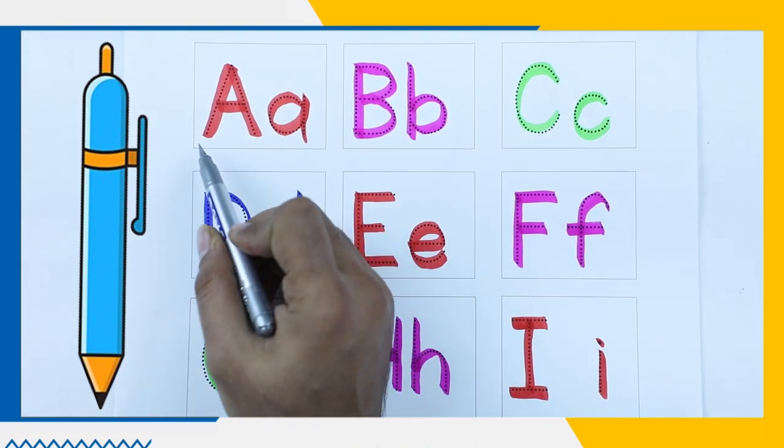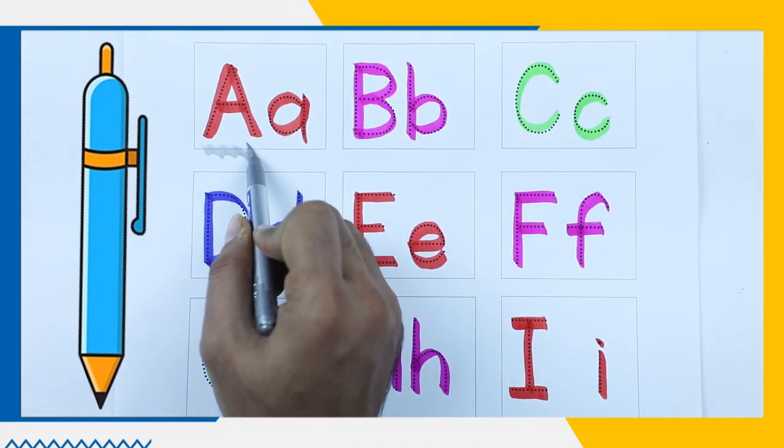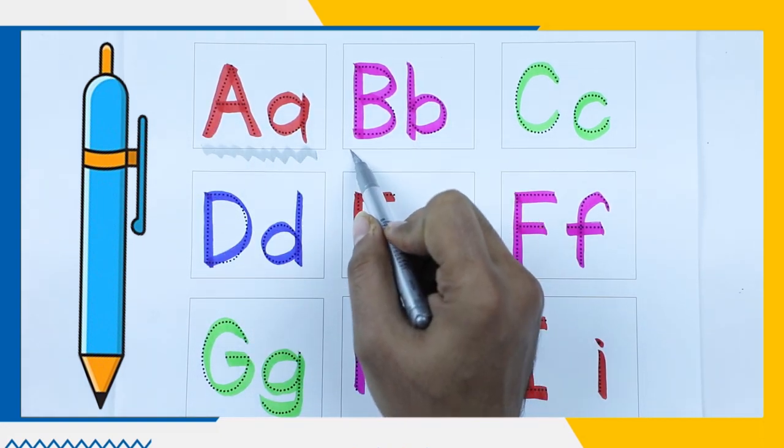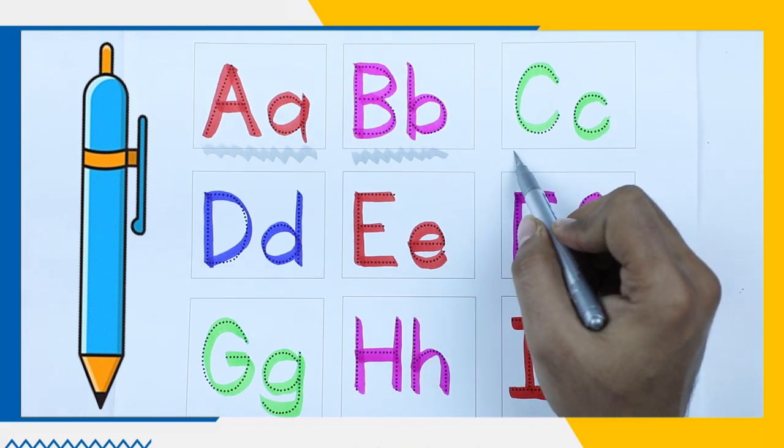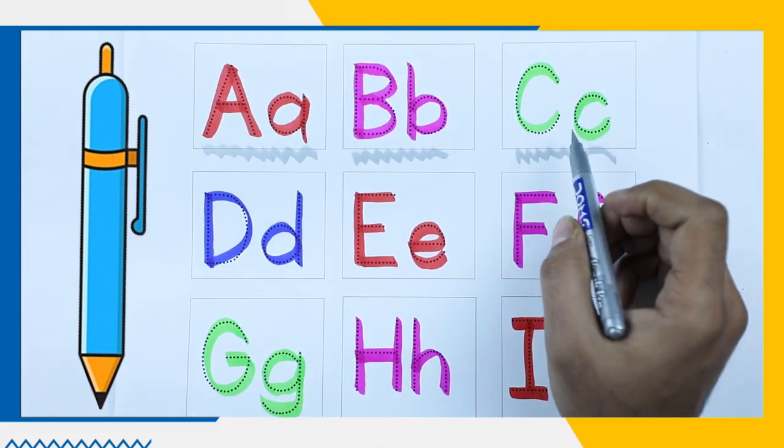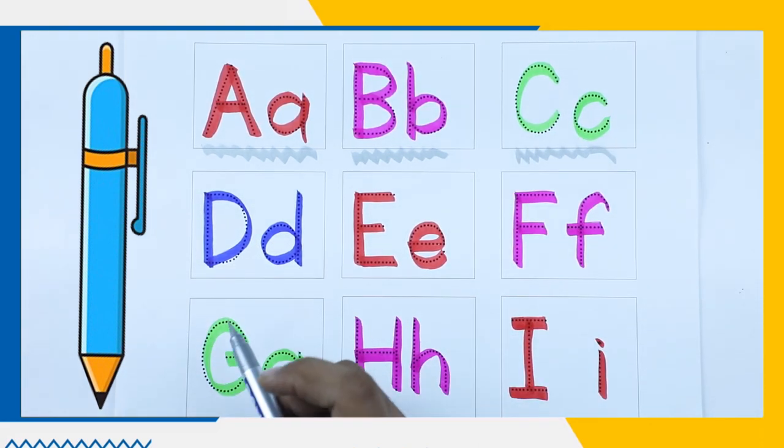It's A, capital A and small a with red color. B, B with pink color. C, C for cat, C with green color.